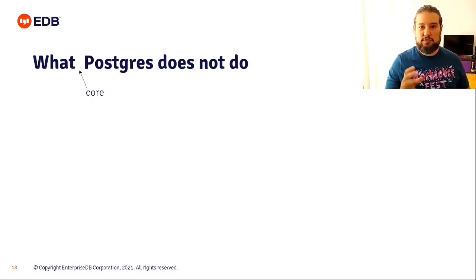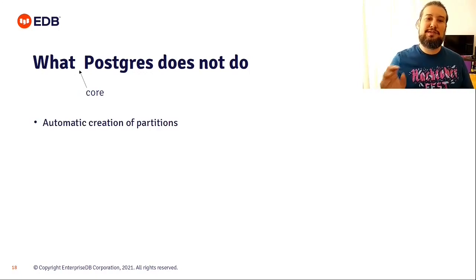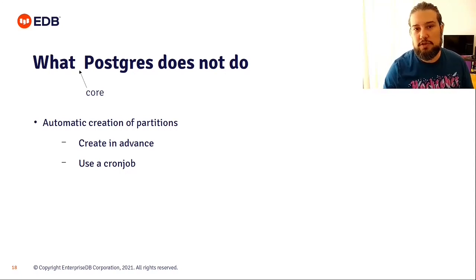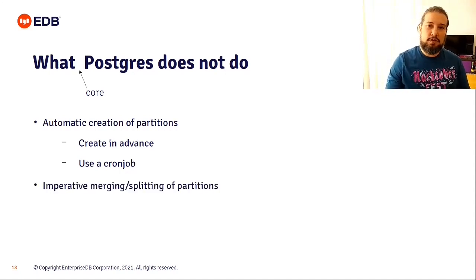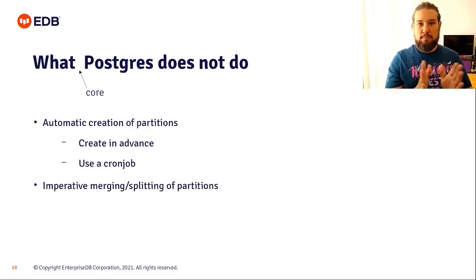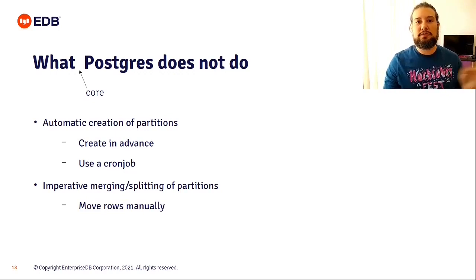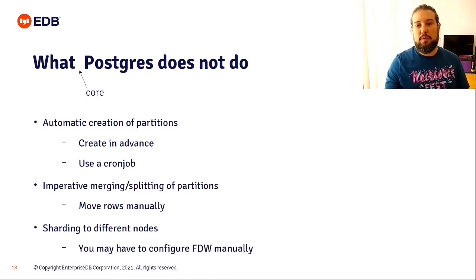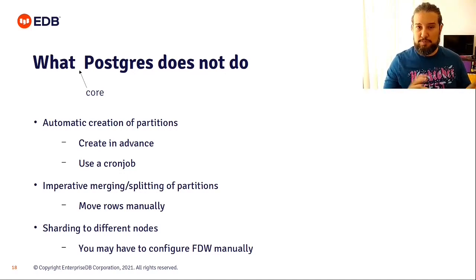Let's talk about what core Postgres does not do. Postgres doesn't create partitions automatically for you — you need to do that in advance for future data, or use a cron job that creates partitions automatically. Merging and splitting partitions is also not available: there's no easy command to merge two partitions or split one into two; you have to move rows manually. And as we mentioned, sharding is not something Postgres can do natively — you can't put different partitions on different nodes, though you may configure foreign data wrappers to move partitions into other systems.